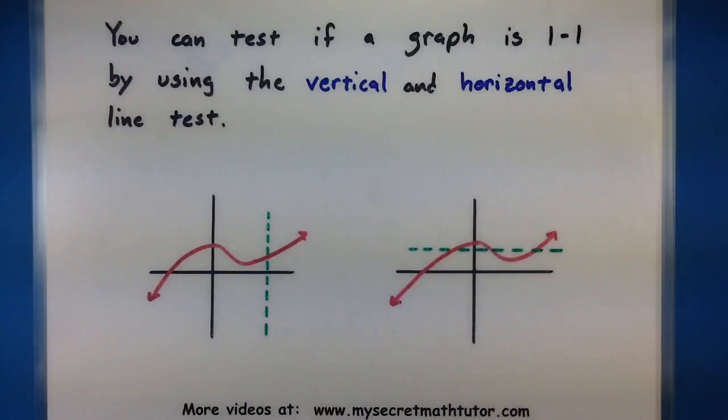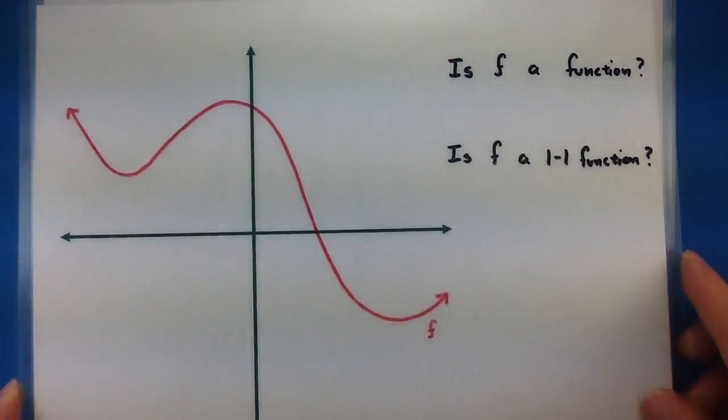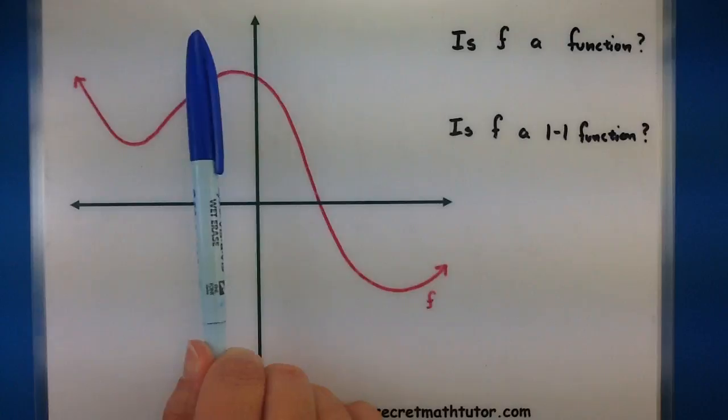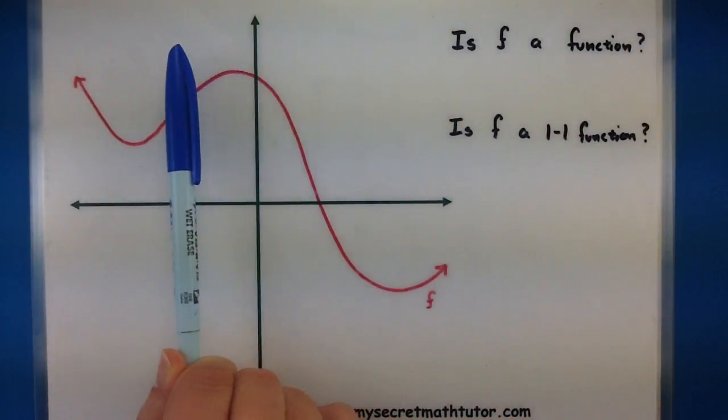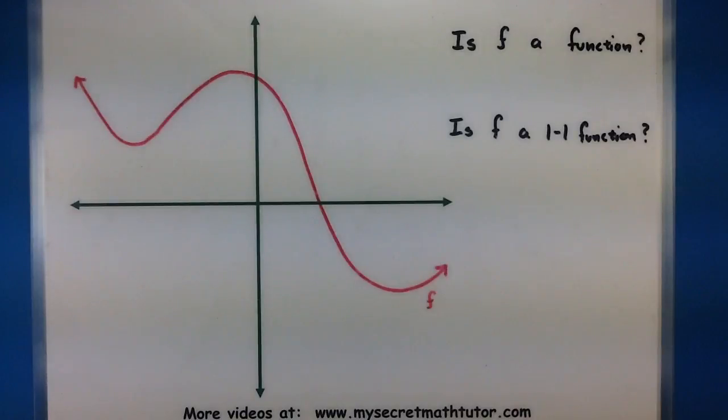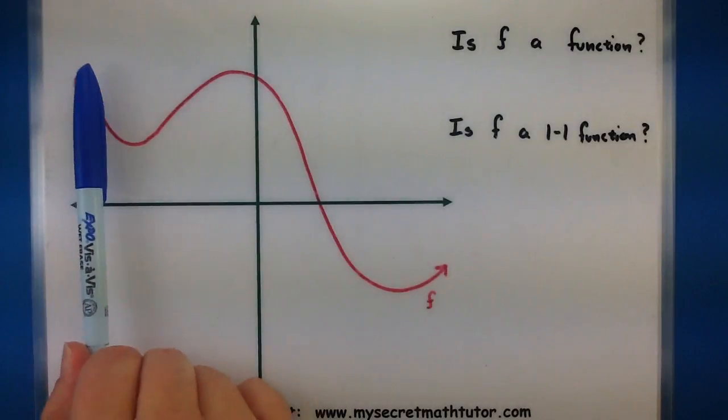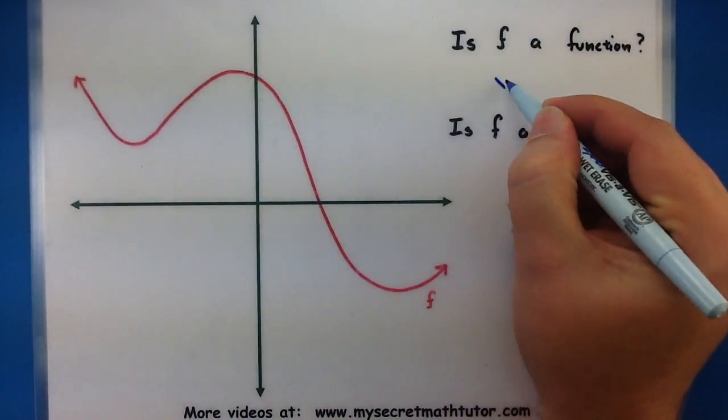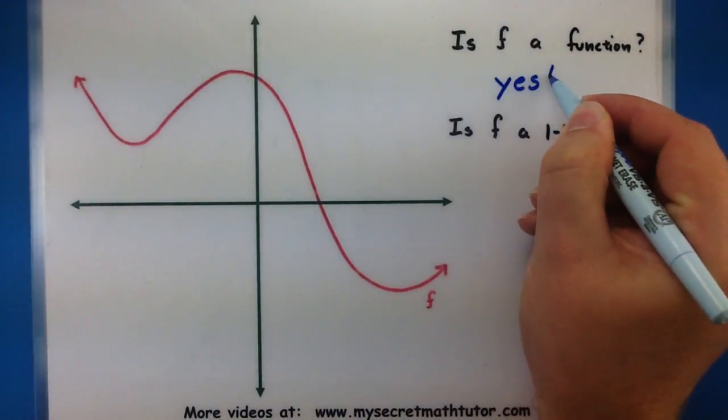So let's use this test on a couple of generic functions and see if they are one to one. So here's an example. I have this function or at least I have this relationship and I want to test if it is a function. So you want to imagine a vertical line. And what you're testing is no matter where you put this vertical line does it cross in more than one spot. Well you can see that no matter where I put this vertical line it only crosses once. So we can say yes this is a function.